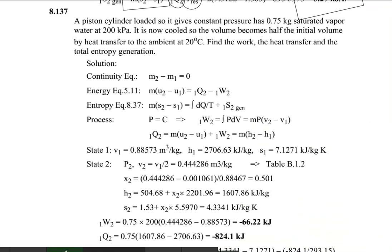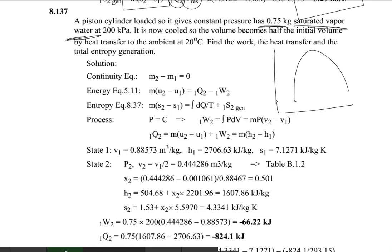Moving forward to Question 8.137: a piston-cylinder loaded to give constant pressure contains 0.75 kg of saturated vapor water at 200 kPa. It is now cooled so that the volume becomes half of the initial volume — that is, V2 equals V1 divided by 2.